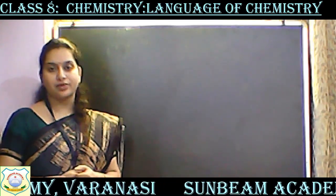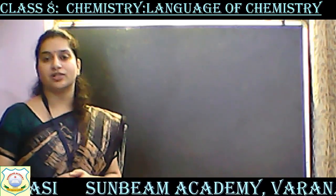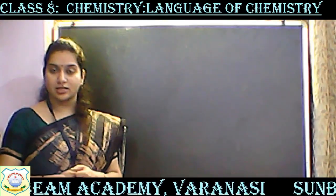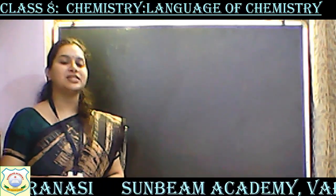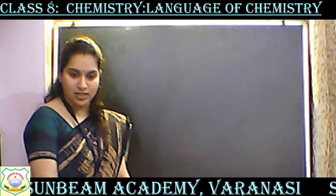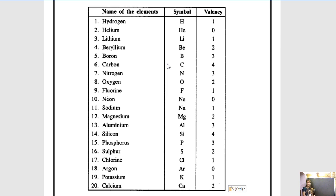Children, before we talk about radicals, I hope everyone knows the first 20 elements and their valencies. If not, I will quickly give you a trick to learn the first 20 elements and their valencies. Let's discuss that first. There is one very easy trick by which you can learn these 20 valencies. Let's quickly start.